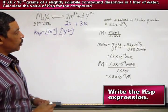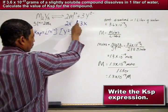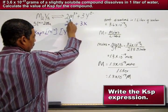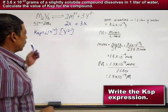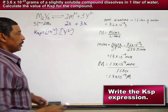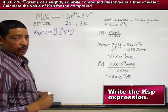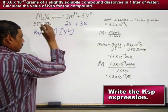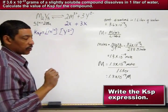In the equilibrium equation, we see that during the ionization, two M3+ ions are produced and three Y2- ions. So when writing the KSP expression, the coefficients associated with each ion will now be used as the exponent for the ion in the KSP expression.